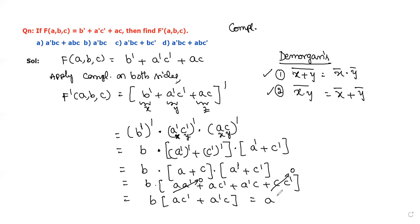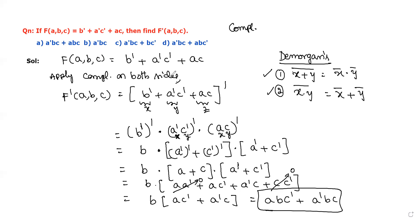Multiplying b through the bracket gives: abc' + a'bc. This is our final answer. Looking at the options, the first term is a'bc and the second is abc', so the answer is option b.